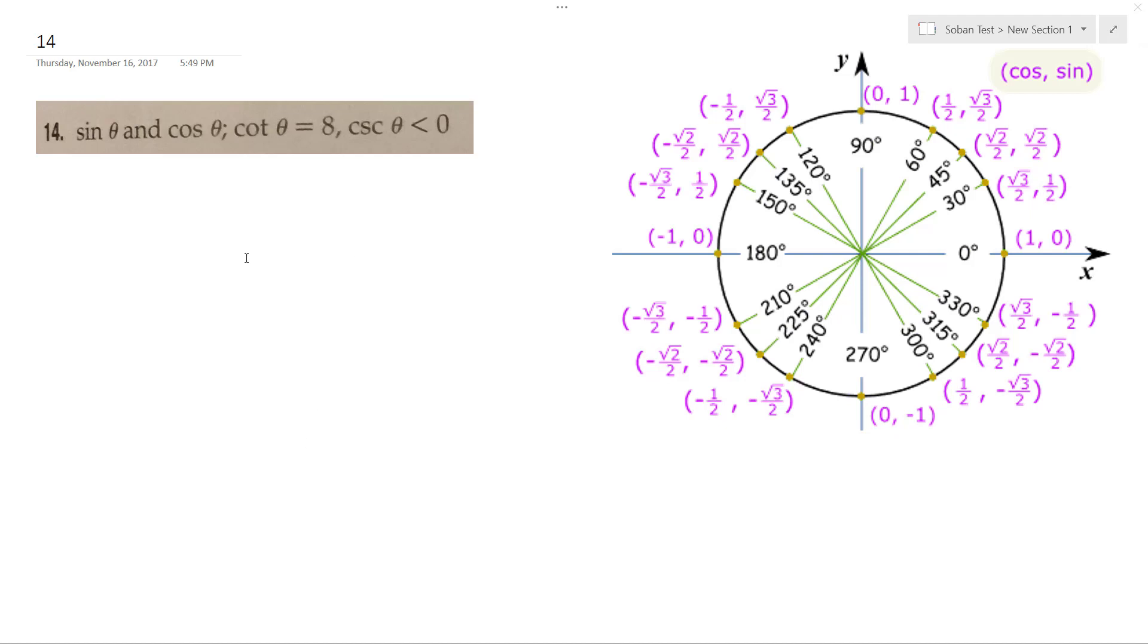All right, solving this problem. So sine θ, cosine θ: cotangent of theta is equal to 8,